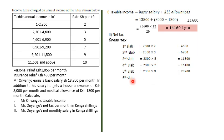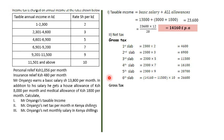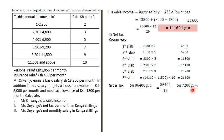In the final slab, 14,160 exceeds 11,500 by a certain amount, so we calculate the excess: 14,160 minus 11,500, then multiply by 10. This comes to 26,600 shillings. Adding all slab amounts gives the gross tax, and dividing by 12 gives 7,200 shillings per month.